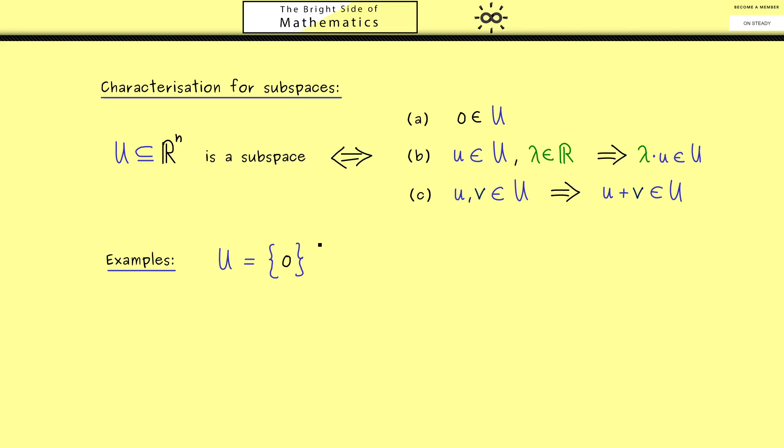And there you should see we can immediately check all the three properties here. The first one is immediately given. The second one means we scale the zero vector, which results in a zero vector again. And the last one just says that we have zero vector plus zero vector. Hence we can conclude this one is a subspace.